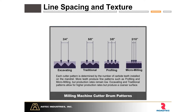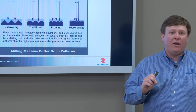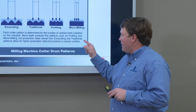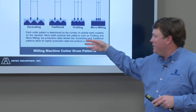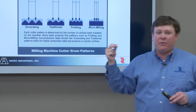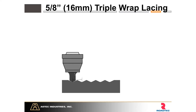Then you have a profiling drum — anything between five-eighths inch and two-tenths of an inch. Two-tenths of an inch is a micro milling pattern, typically done when you have a very thin overlay of asphalt coming. Because the thinner the overlay, the finer the surface needs to be. If you tried to overlay a rough texture with a very thin layer of asphalt, the surface would mirror through and you'd still have a newly paved rough surface. Five-eighths of an inch means that in one rotation of the drum on the surface, the peak-to-peak and valley-to-valley measurement is five-eighths of an inch.